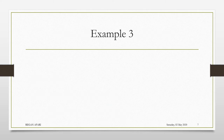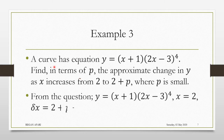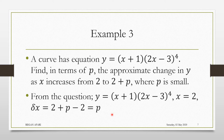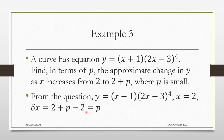Our third example. We have a curve defined by a given equation. We are to find, in terms of p, the approximate change in y as x increases from 2 to 2 + p, where p is small. This question is very similar to the previous one. The only difference is a different definition for the curve. We state the important things: the curve, x started from 2, and the small change in x is (2 + p) − 2, giving us p.